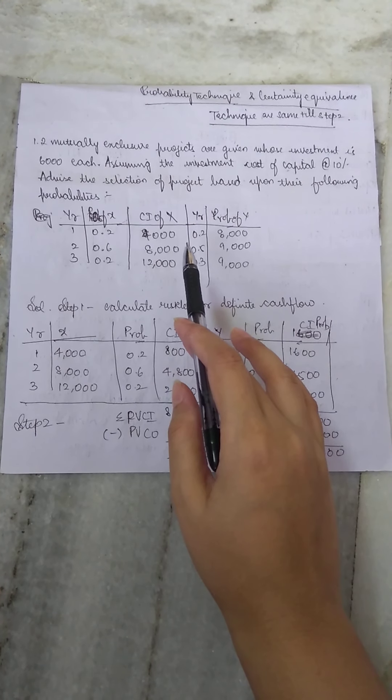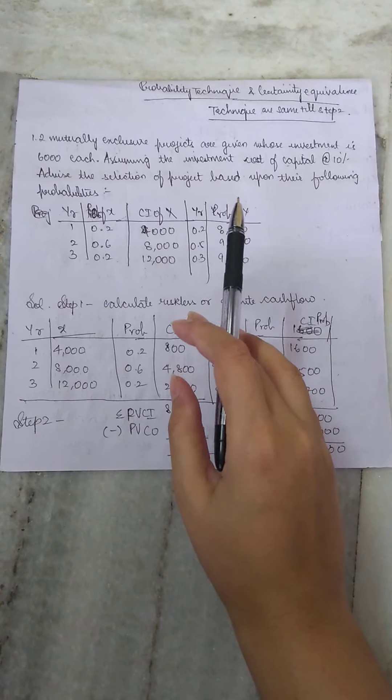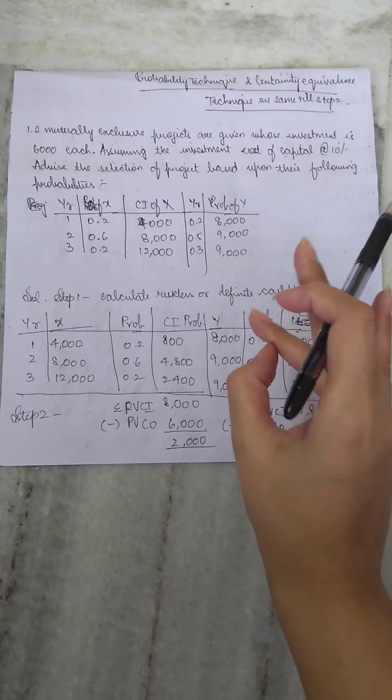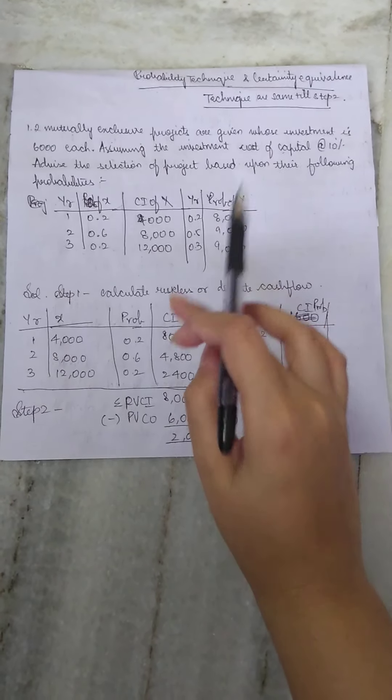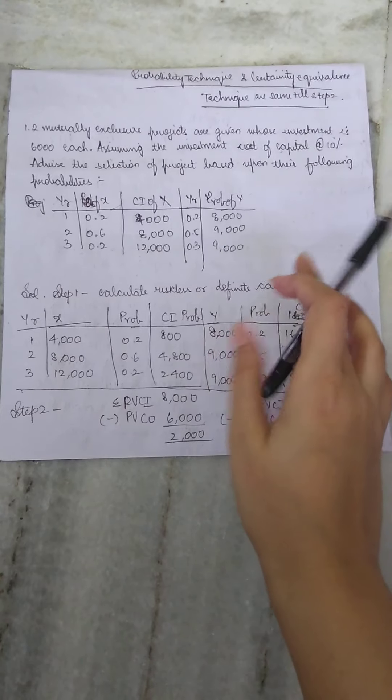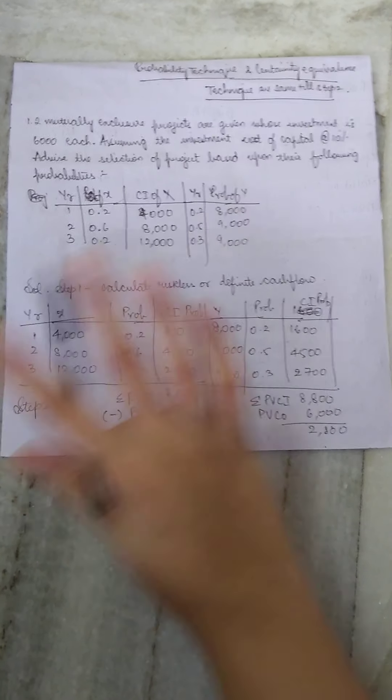So what are the steps in certainty equivalence? First you calculate your riskless cash flow. Second you calculate your NPV. Third you compare the riskless and the risky cash flows, divide them and get your certainty equivalence. So here nobody is asking you for certainty equivalence.